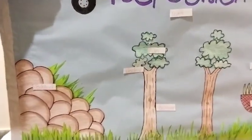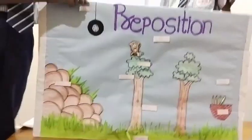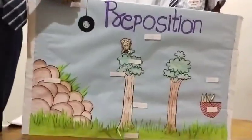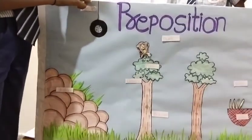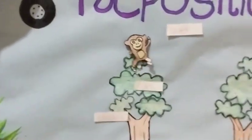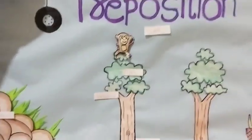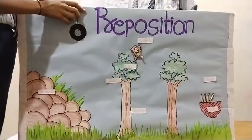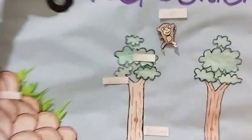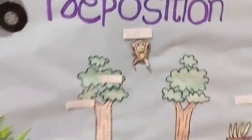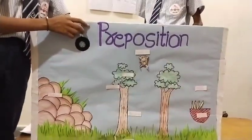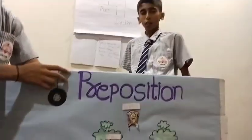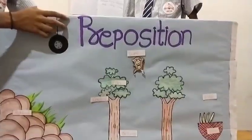Now, monkey sat on the tree. Here, 'on' is a preposition of place. Now monkey is over the tree. Here, 'over' is a preposition.